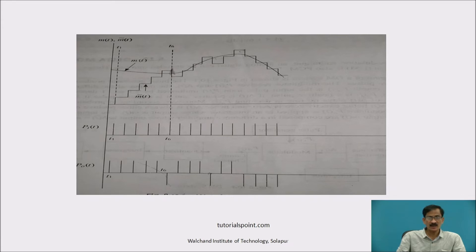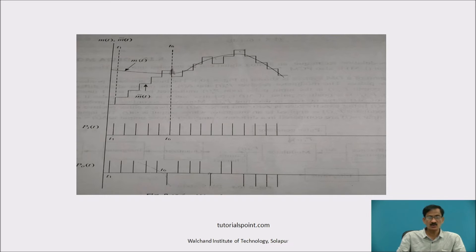At T6, the predicted output is greater than the analog signal M(T), so the output is negative. Hence, the difference amplifier gives a negative output — minus delta — so the staircase output goes in the negative direction, as shown at instant T6. In this way, the predicted staircase output follows the analog signal shown at the top of the diagram. P(T) is an impulse generator, and P_0(T) has positive pulses corresponding to positive delta and negative pulses corresponding to negative delta.